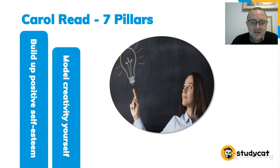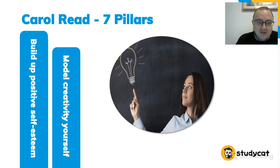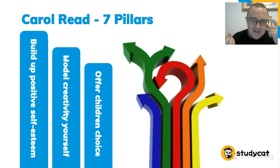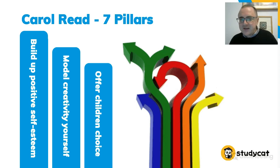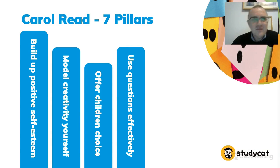Pillar two: to encourage and develop creativity, you need to be creative yourself. If you come to class and do the same thing every day, you don't model creativity, so why would your students? They need to see a good model. Pillar three: children need choice. Any time they have choice, they have to think creatively about which option they want — do they want to write it or say it, draw it or do a presentation.